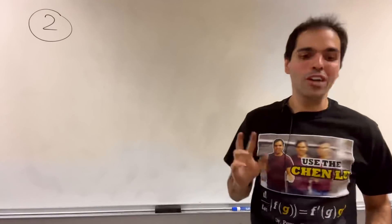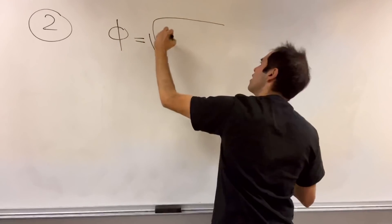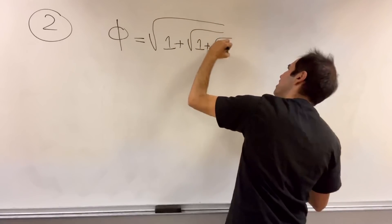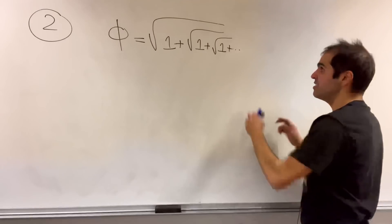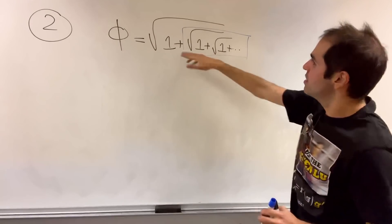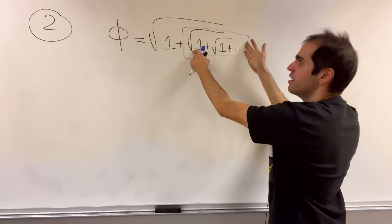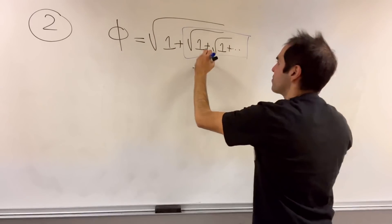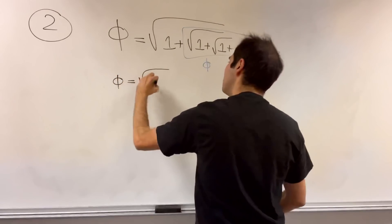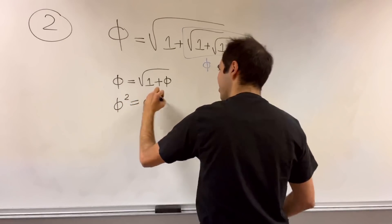Second of all, for the golden ratio, remember you have this beautiful identity that phi is square root of one plus square root of one plus square root of one, etc., which can be easily seen because it's kind of a fractal thing going on. If you let phi to be square root of one, etc., this little part is the same thing as phi. So therefore what you get is phi equals square root of one plus phi, and so phi squared equals one plus phi.